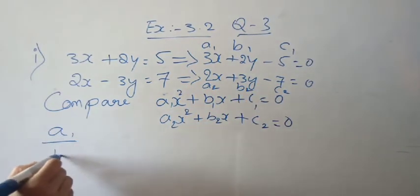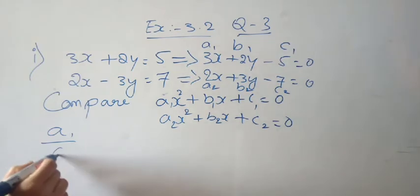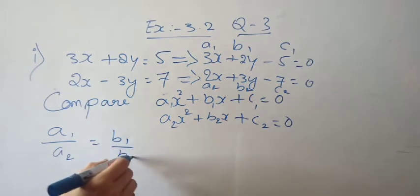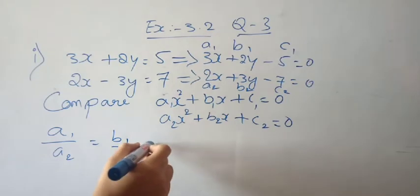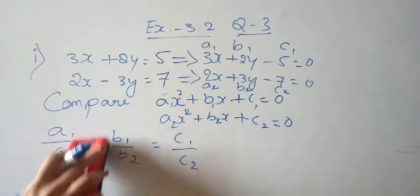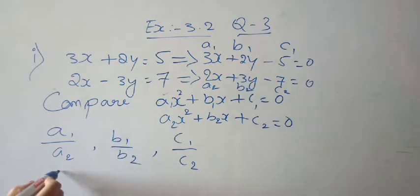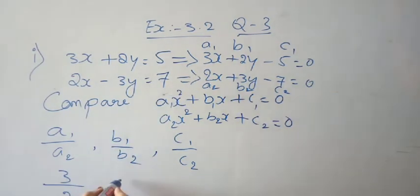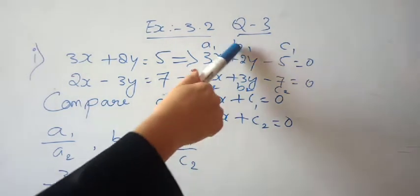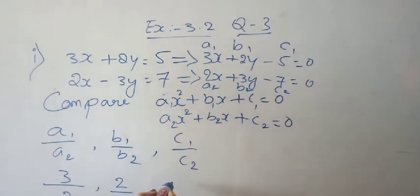Let's compare a1 upon a2, b1 upon b2, and c1 upon c2. So here, a1 is 3, a2 is 2, so a1/a2 is 3 by 2. b1 is 2, b2 is 3, so b1/b2 is 2 by 3. Then c1 is minus 5 and c2 is minus 7, so c1/c2 is 5 by 7.